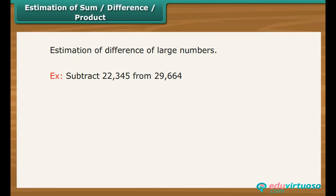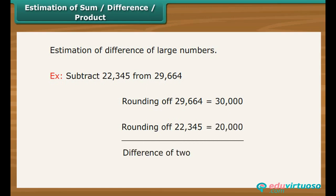For example, subtract 22,345 from 29,664. Rounding of 29,664 would make it 30,000. Rounding of 22,345 would make it 20,000. Difference of two is equal to 10,000.